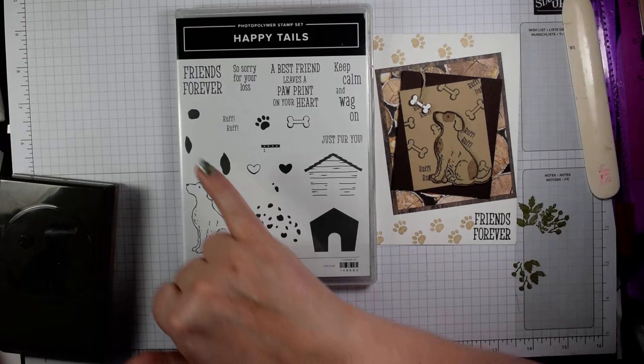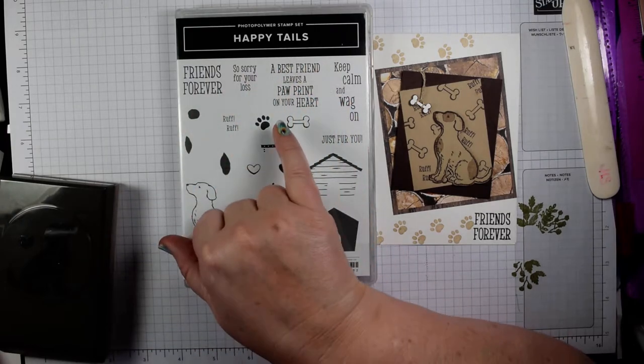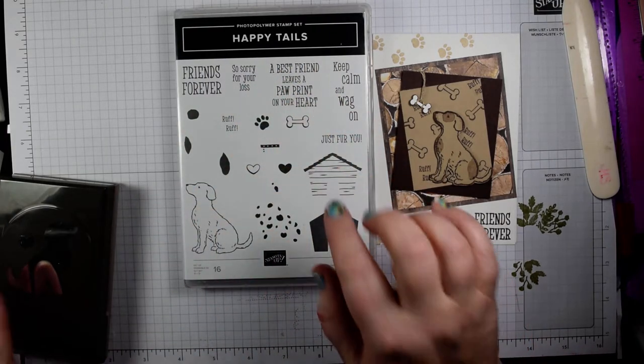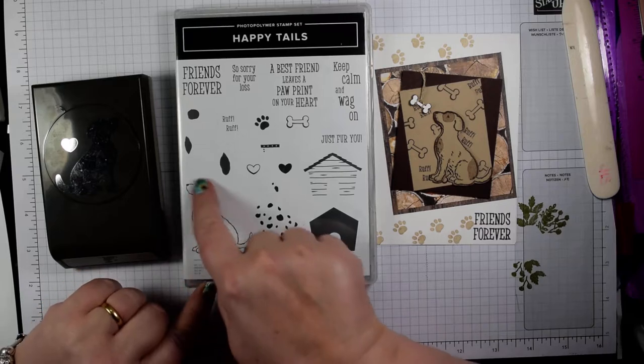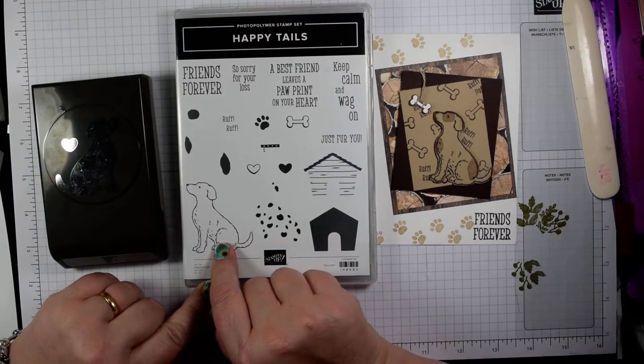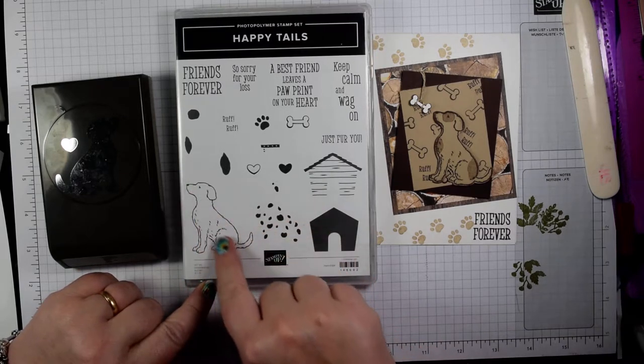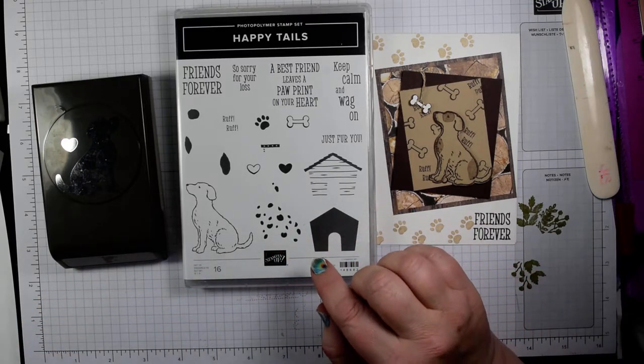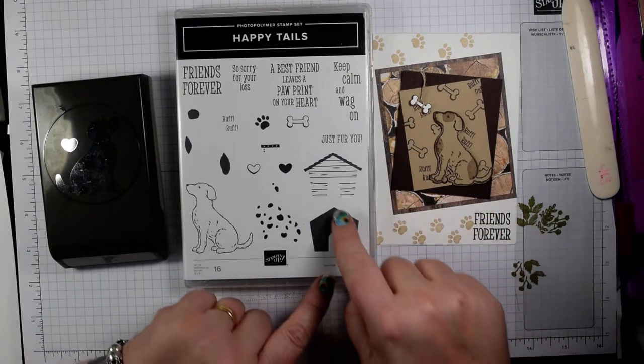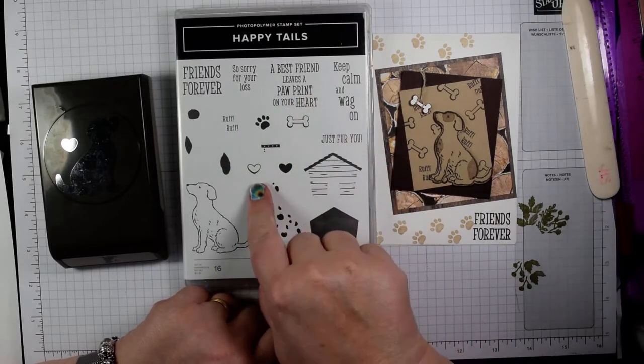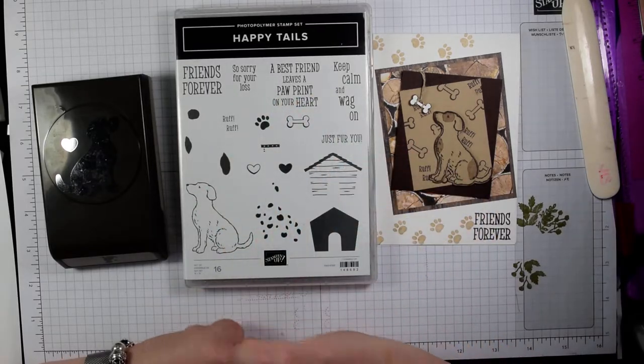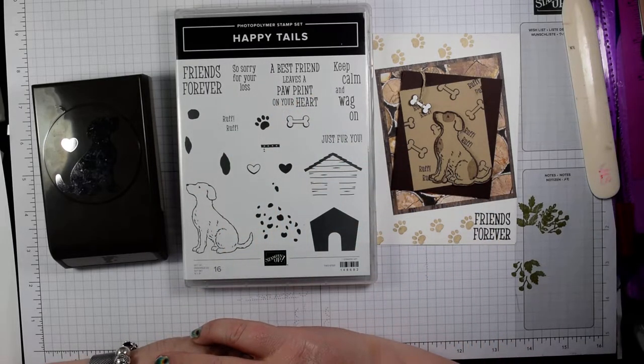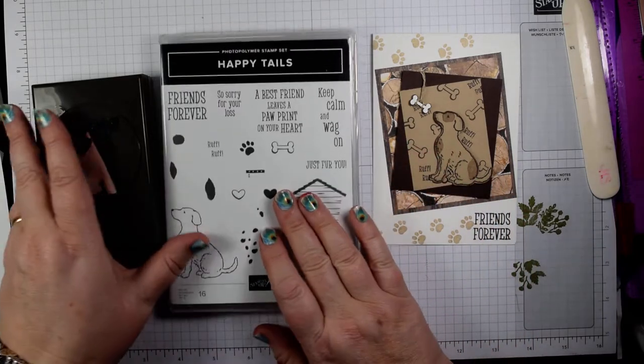It has super sentiments in here to cover all sorts of situations. You've got the lovely dog here. I love it because it reminds me of a retriever, a Labrador sort of dog. It can also be made to look like a Dalmatian with spots. You've got this super little kennel and then lots of little accents and bits and pieces. So that's the stamp set we're using.